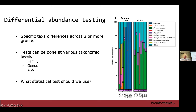We can run differential abundance tests at different taxonomic ranks — at the genus level, the family level by collapsing to family, or at the ASV level. We don't usually do species level with 16S data because we just don't have enough taxonomically labeled data at the species level, so you typically go from genus straight down to ASV.